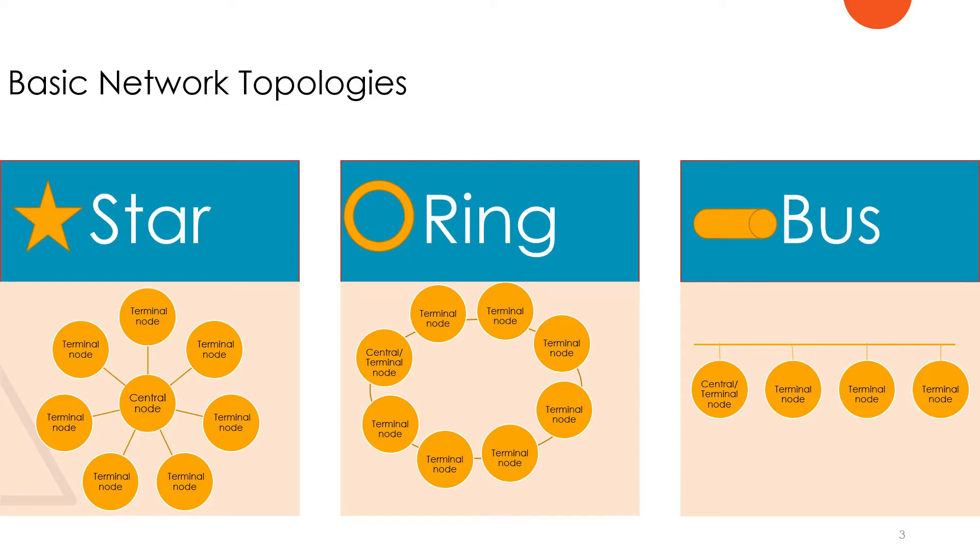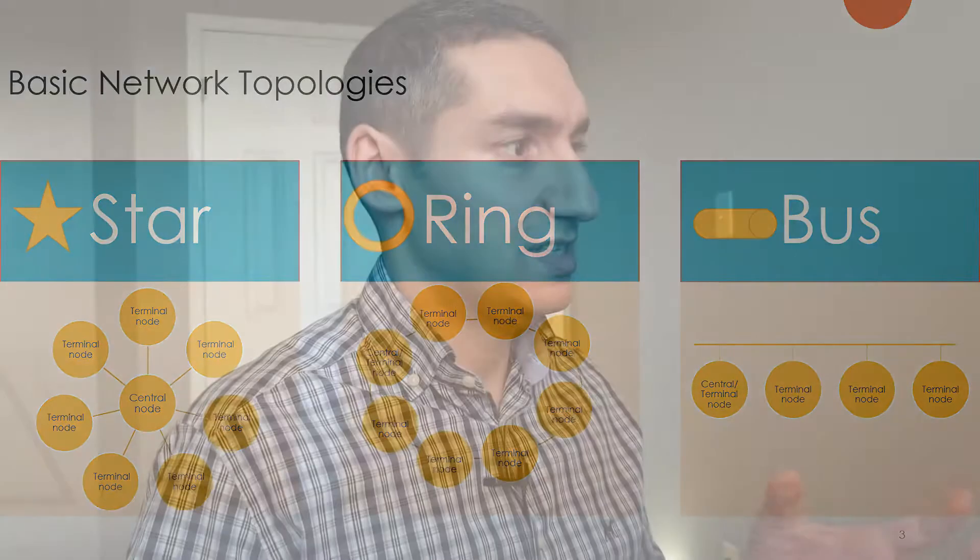In a star topology, we have a central node that is connected to each terminal node with a dedicated link. In a ring, we have a link going through the nodes, so every signal needs to pass through every node before it reaches the other.